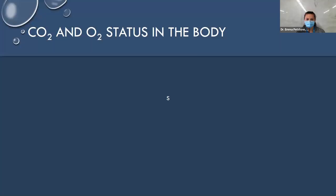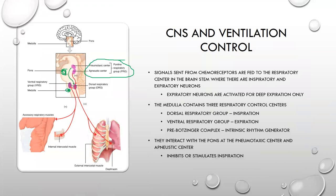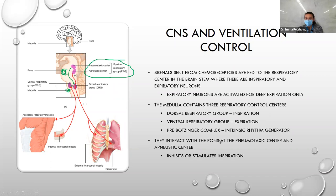Summary of medullary and pontine centers: dorsal respiratory group controls inspiration (can speed up or slow down); ventral respiratory group controls active expiration; pre-Bötzinger complex is the intrinsic rhythm generator. At the pons: pneumotaxic center only inhibits inspiration; apneustic center only stimulates inspiration. Both pontine centers only affect inspiration, similar to the dorsal group — just one side or the other.